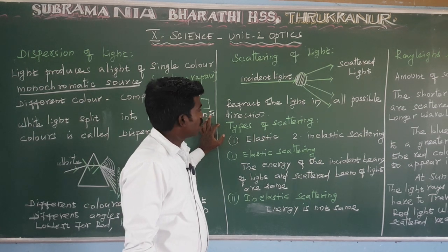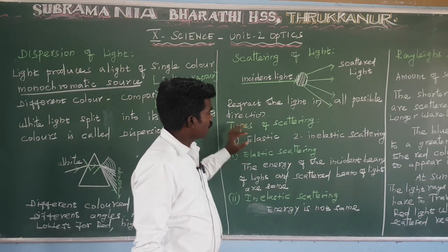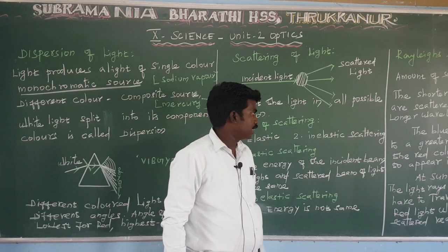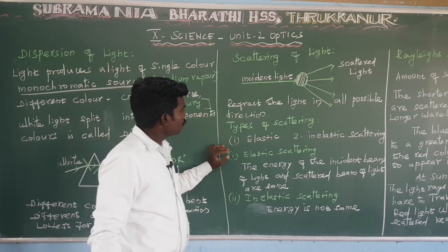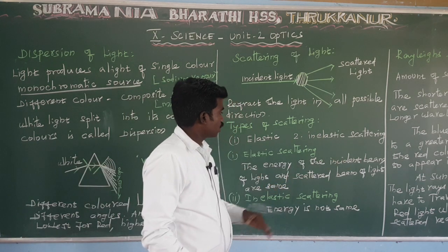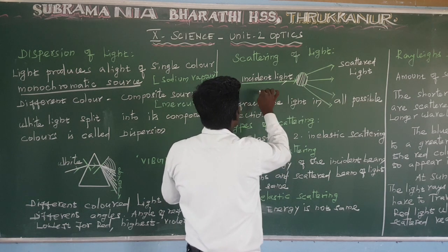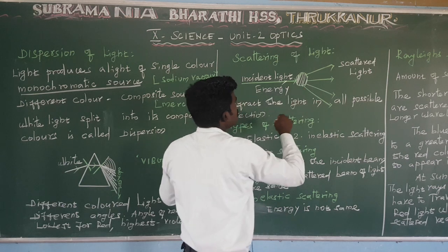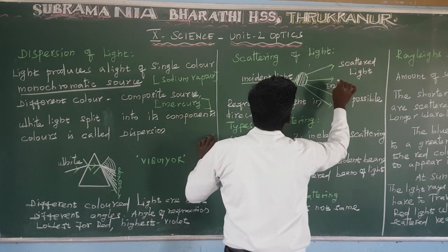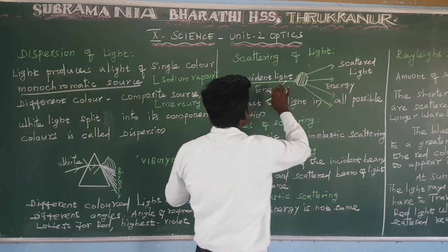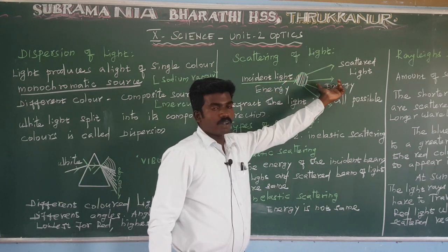In elastic scattering, the energy of the incident beam of light and the scattered beam of light are the same. So the incident ray energy and the scattered ray energy are equal — that is elastic scattering.